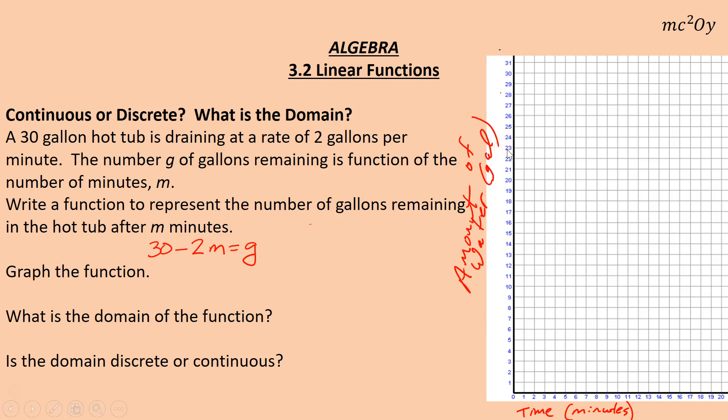And so we start at 30. At zero minutes, and another way to draw a table, is to do an H table, where I have my minutes, my independent, my dependent, and then my rule. This is my rule, 30 minus 2m. So at zero minutes, let's say, that would be 30 minus 2 times 0, or 30 minus 0, which is 30. At one minute, it would be 30 minus 2 times 1. Notice the m just keeps changing. That's 28.